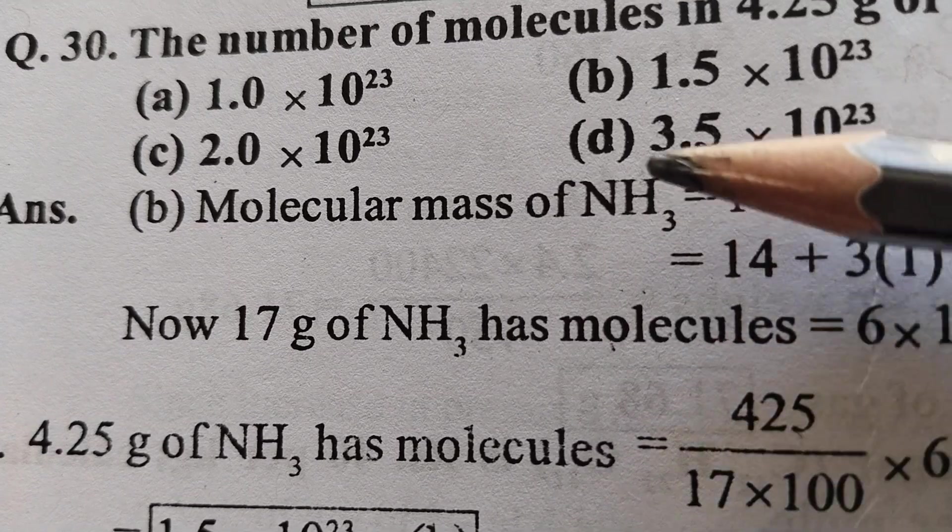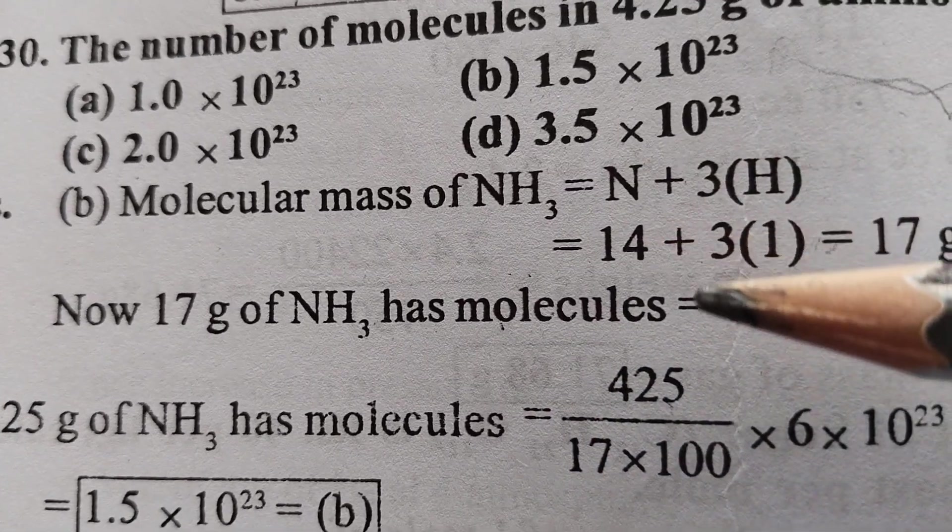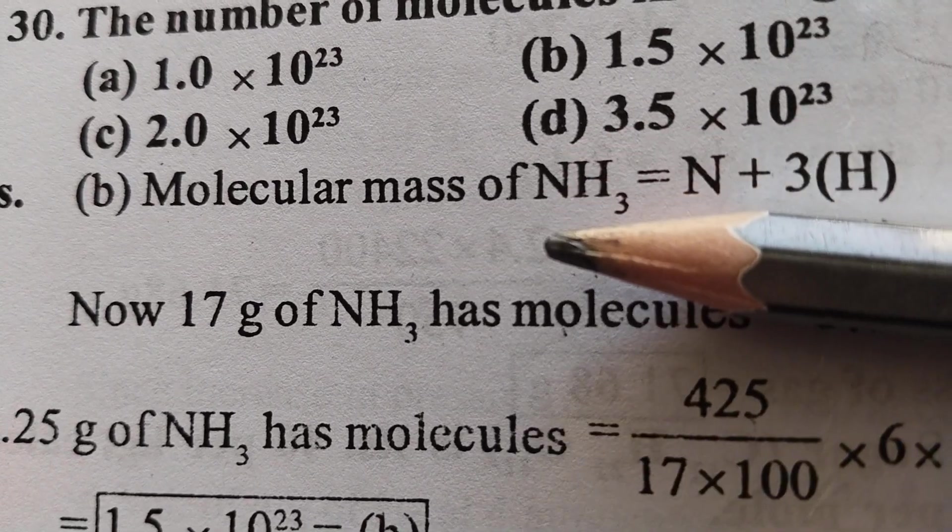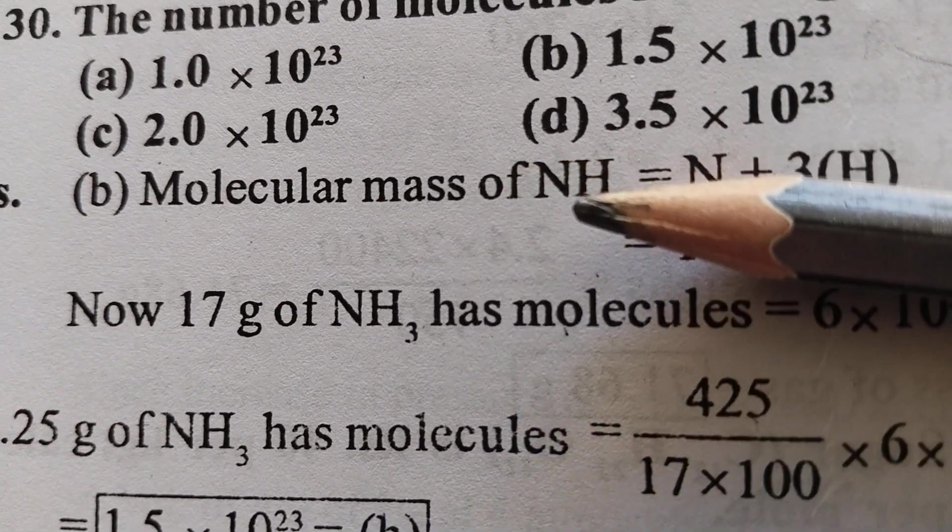So three hydrogens are available, 3 × 1. So 14 + 3 × 1, that is 17 grams is the molecular mass of ammonia.